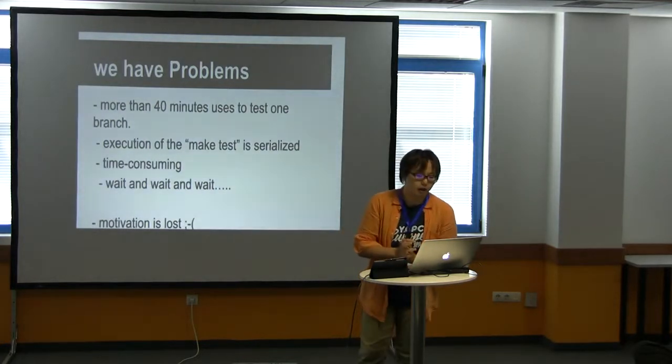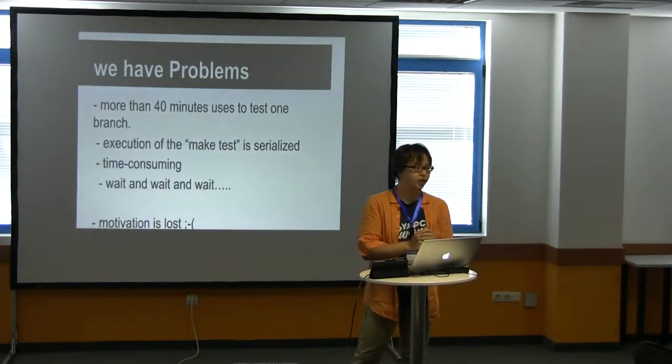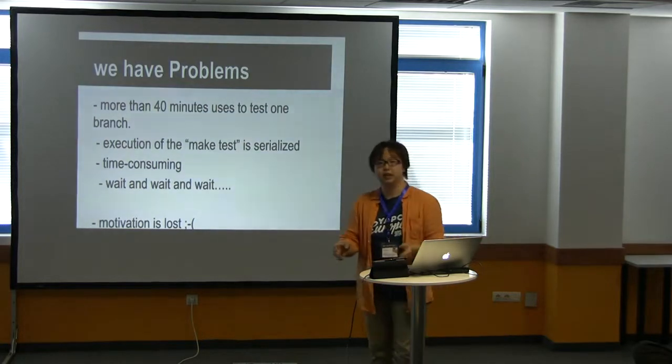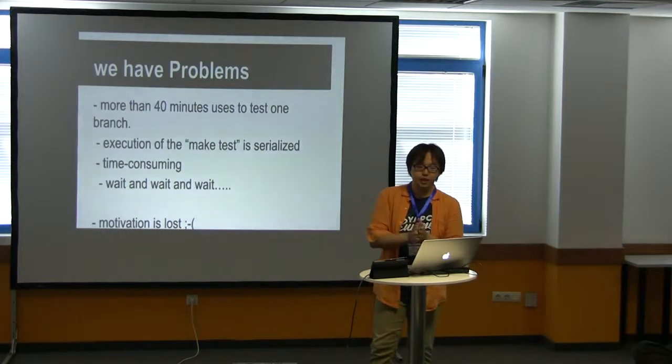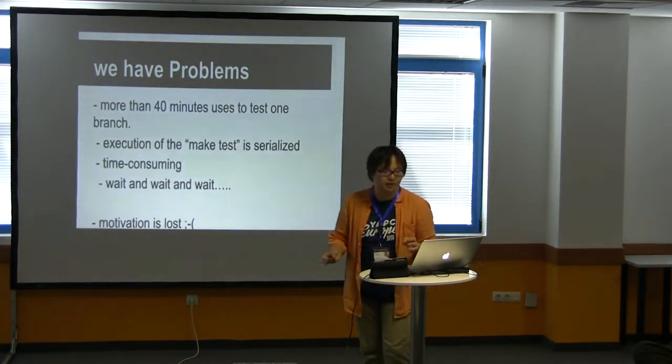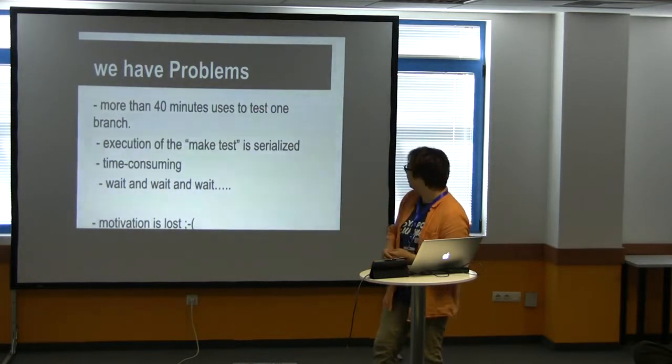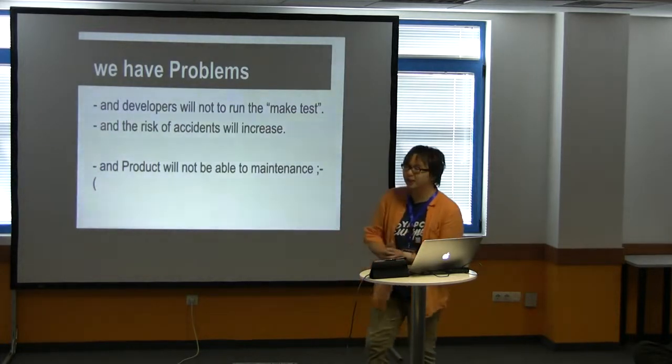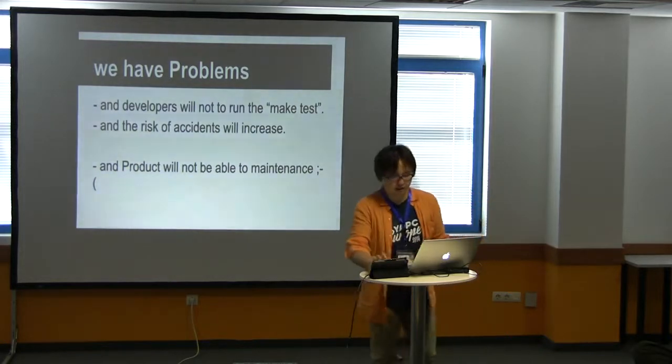So we have problems. It takes more than 40 minutes to test one branch, so time-consuming as branches and test cases increase. When pushed at the same time, branch A and branch B, the execution of the test is serialized. During branch A, then branch B starts. In other words, the owner of branch B is made to wait 80 minutes to complete the test. When the test fails after waiting a long, long time, wait, wait, wait and wait, and fail, my motivation is lost. So developers will not learn to make tests. The risk of accidents will increase, and the product will not be able to be maintained. That's not the future.